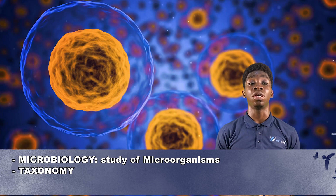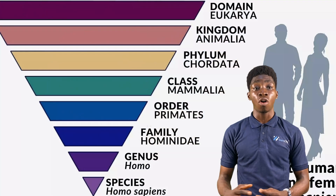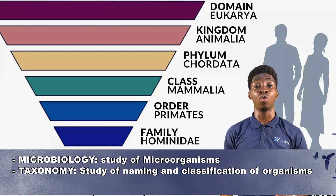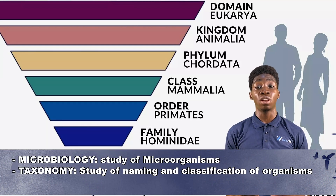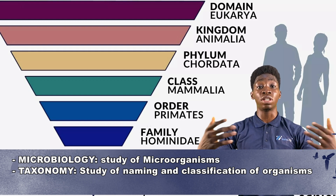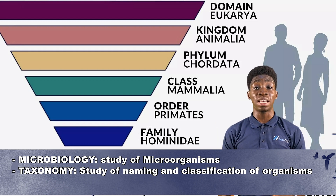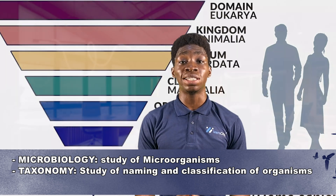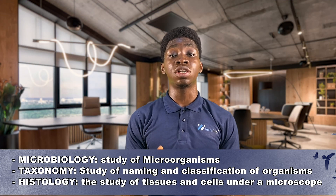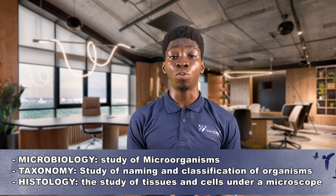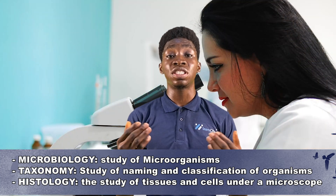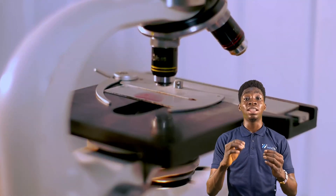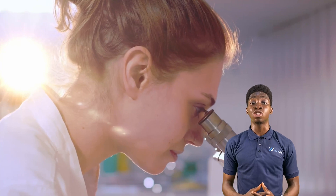We also have taxonomy, which is the study of naming or classification of organisms — for example, why we call a lion a lion, why we classify maize as a plant and a lion as an animal. Then we have histology, which is the study of tissues and cells under a microscope, looking at cells and tissues of living things carefully at the microscopic level.